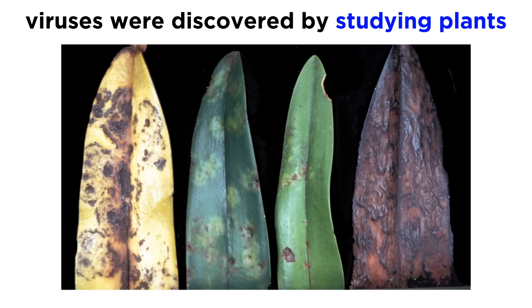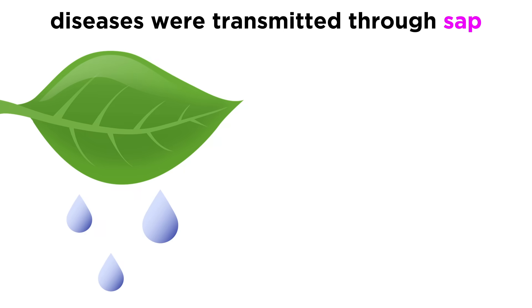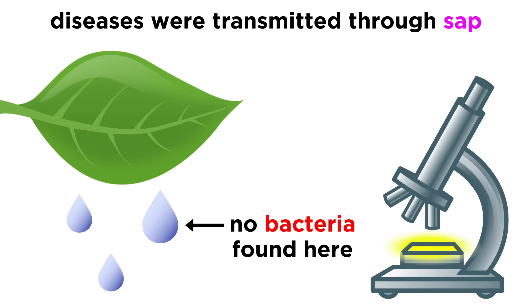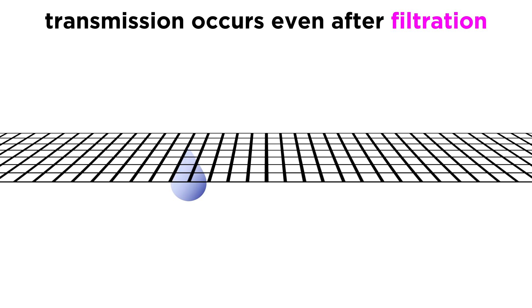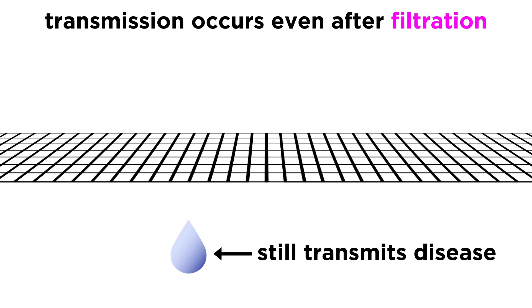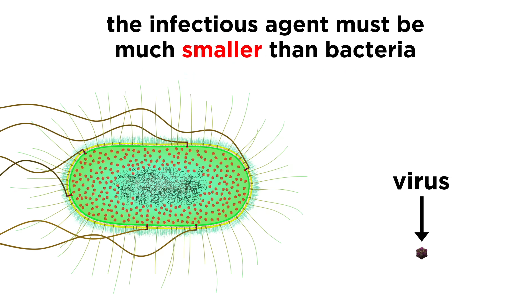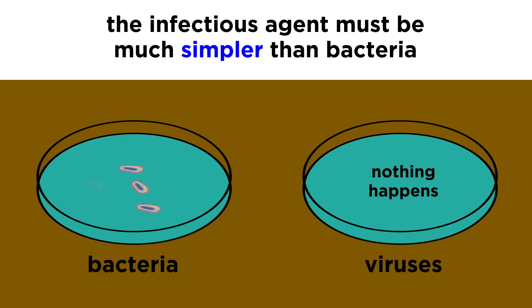Viruses were discovered in the late nineteenth century when examining certain diseases that afflicted plants. It was found that sap from the plant would transmit the disease, even though no bacteria were visible in the sap when examined with a microscope, and the sap would still transmit the disease even when it was filtered by a process meant to remove any such bacteria. This meant that the agent responsible for transmitting the disease must be way smaller than a single bacterium. But this agent could not be cultivated in test tubes or petri dishes, so it must also be much simpler than a bacterium.